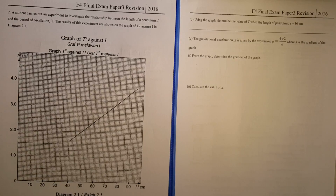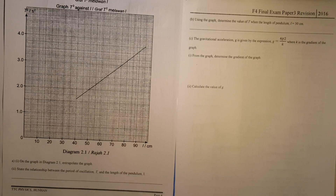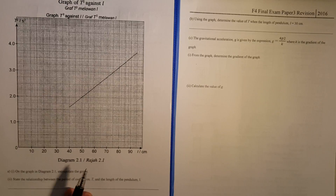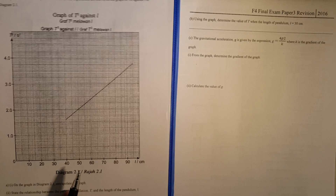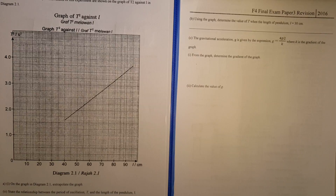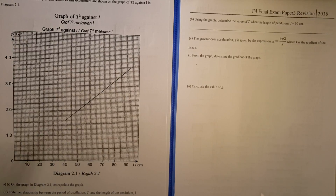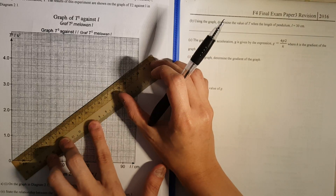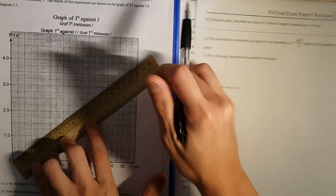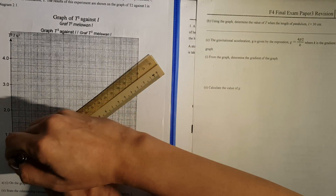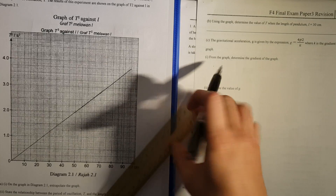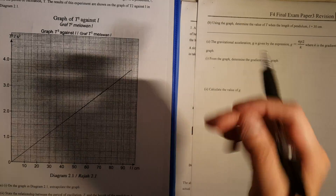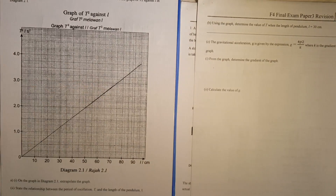They'll always start off by asking you to state the relationship on the graph and to extrapolate the graph. When you extrapolate the graph, what you're trying to do is extend the graph — draw a line until it intersects. At this point, you will use a solid line. So this is extrapolation done.